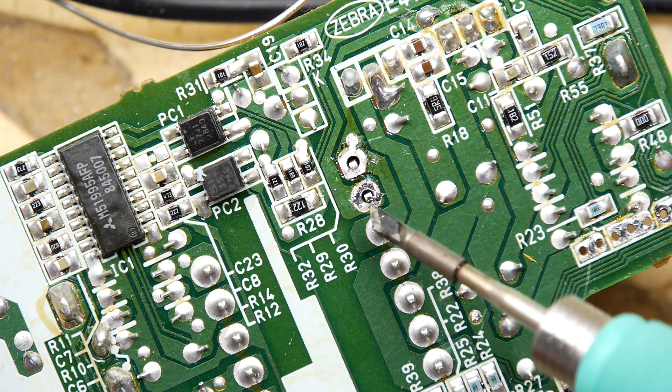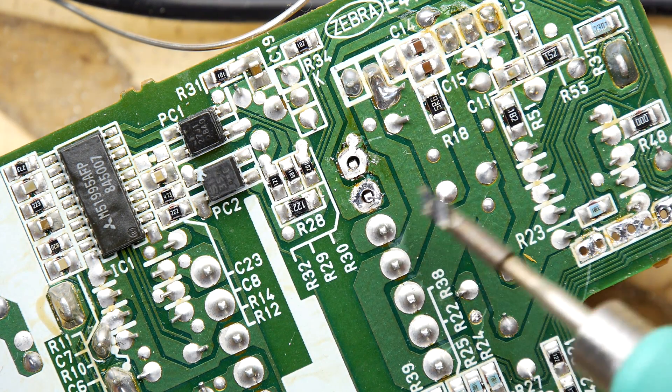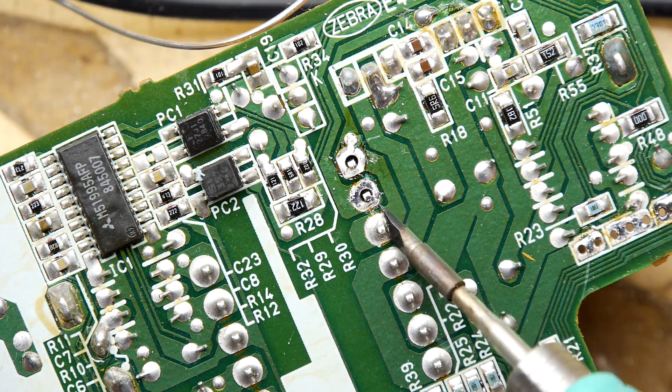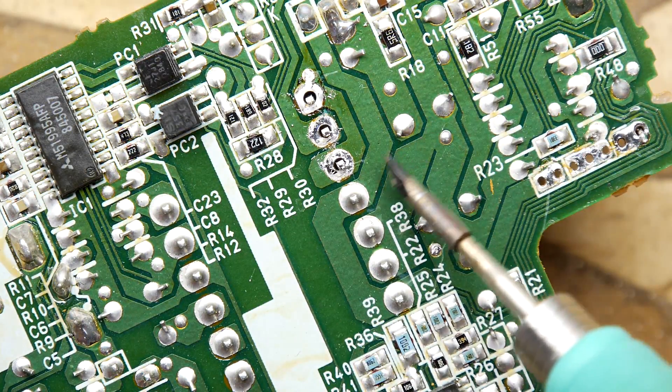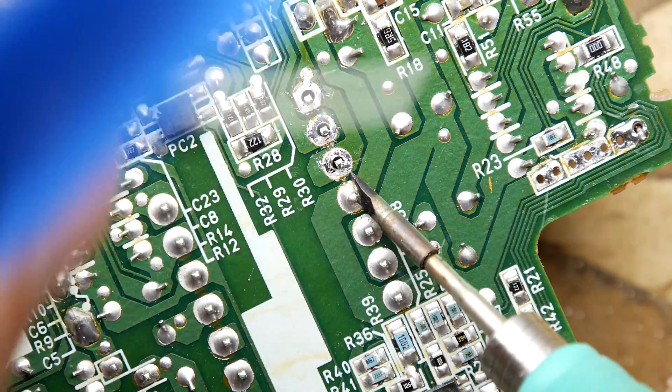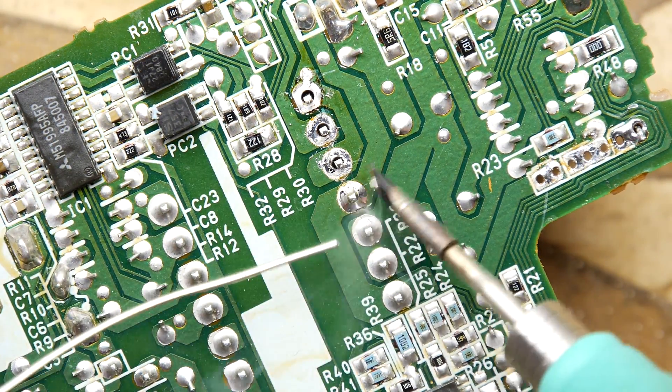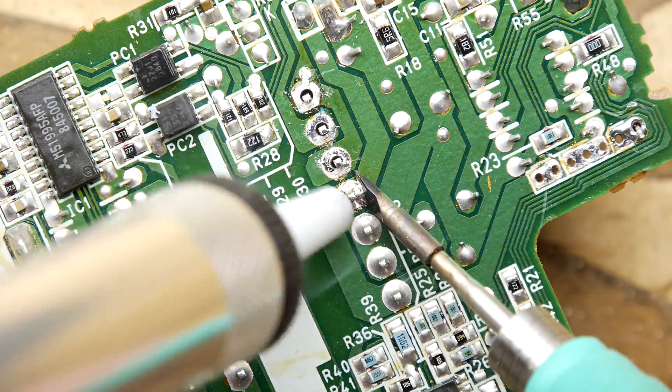It's not ideal, to be honest. There's always little bits there grabbing it. It tends to try to snag, but it gives you a fighting chance of getting it off. You can see we're whizzing through, and actually this is not a bad solder sucker—it's a cheap one from a cheap kit.